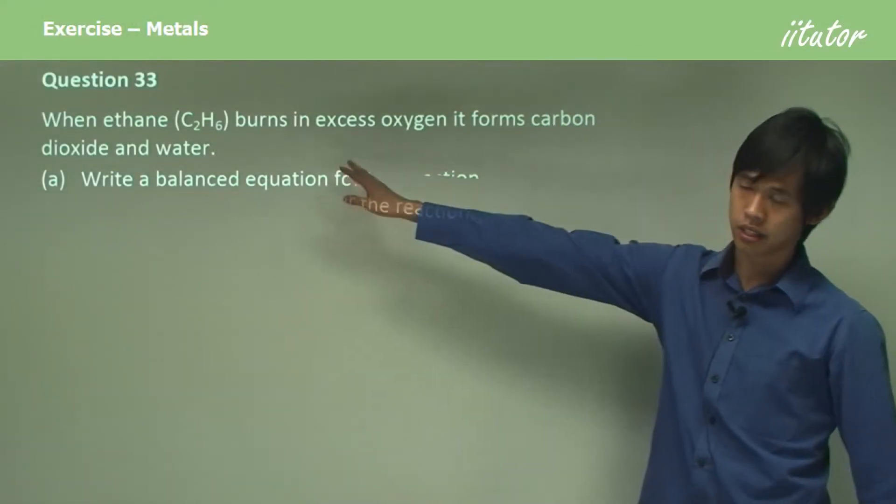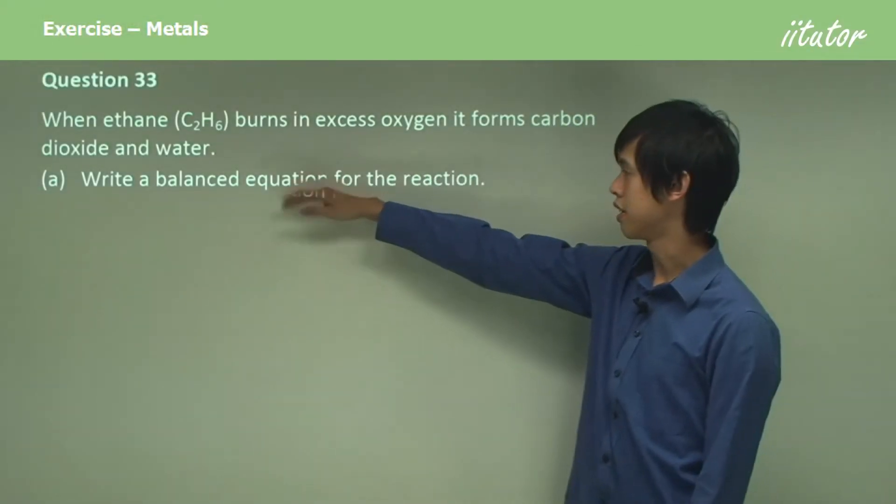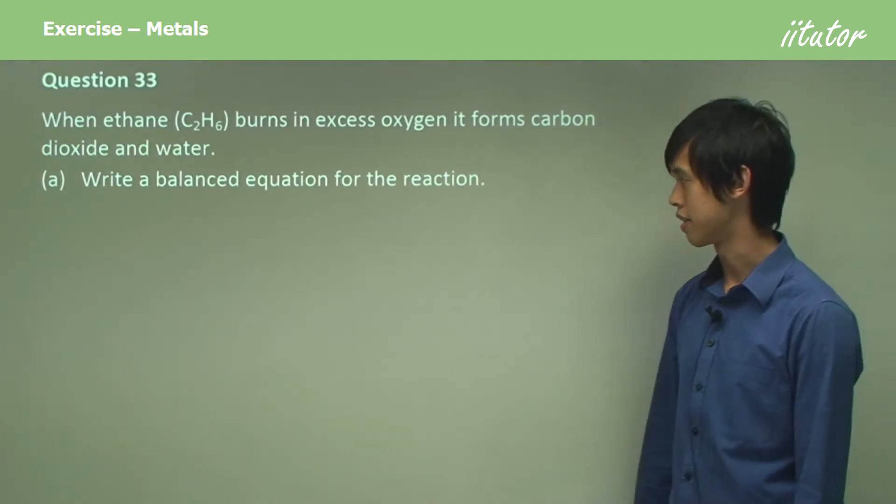So when ethane, which is C2H6, burns in excess oxygen, it forms carbon dioxide and water. Write a balanced equation for this reaction.